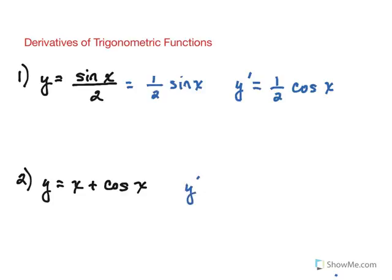The second one is equally straightforward. Derivative of x simply is 1, derivative of cosine is negative sine. Pretty easy so far.